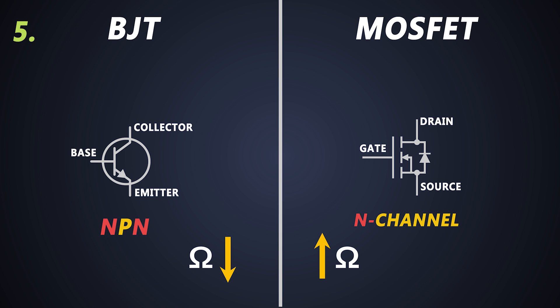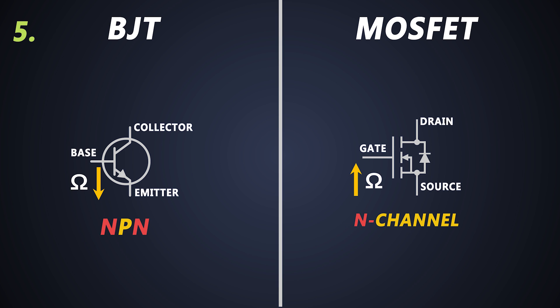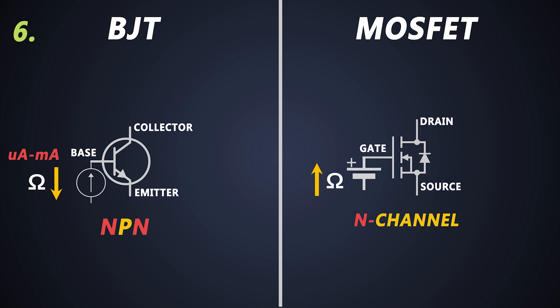The input resistance of the BJT is very low, but the input resistance of the MOSFET is high. Since BJT is a current-driven device with very low input resistance, it needs microamperes to milliamperes of current at the input, depending on the current flowing through the Collector and Emitter. MOSFET is a voltage-controlled device with very high input resistance, so it restricts high current at the input — the input current is very low, in the range of picoamperes, to turn it ON.